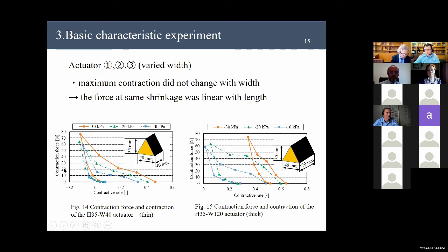In the result of 1, 2, and 3, the actuator width was varied. Figure 14 shows the measurement result of the actuators which is thin. Figure 15 shows the measurement result of the actuators which is thick. Thus, it was confirmed that the maximum contraction didn't significantly change with width. This was because the change in width corresponds to the case where the actuators are connected in parallel. Therefore, the force at the same shrinkage was linear with respect to length.